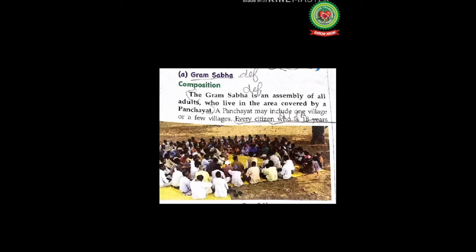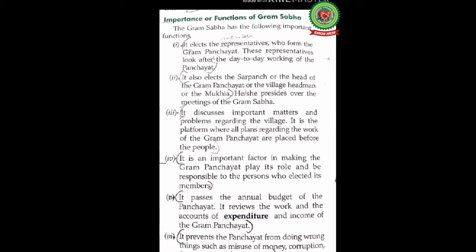The gram sabha is an assembly of all adults who live in the area covered by a panchayat. A panchayat may include one village or a few villages. Every citizen who is 18 years of age or above and whose name is in the voter list is a member of the gram sabha. The gram sabha holds meetings where people directly participate and seek answers from their elected representatives. Meetings are held at least twice a year.